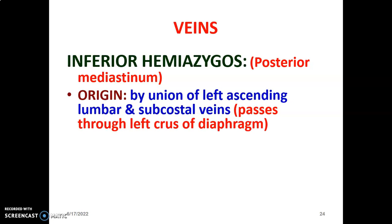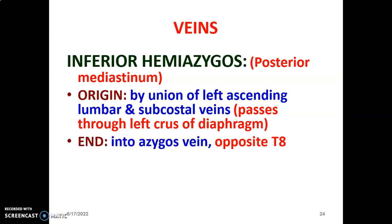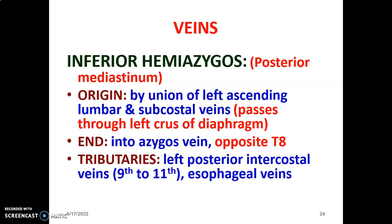The inferior hemiazygous is also in the posterior mediastinum, formed by the union of the left ascending lumbar and subcostal veins, and usually passes through the left crus of the diaphragm. It terminates at the azygous vein opposite T8, and the main tributaries include left posterior intercostal veins and esophageal veins.